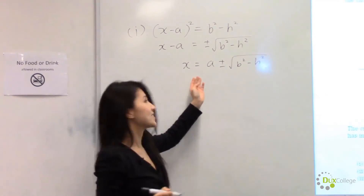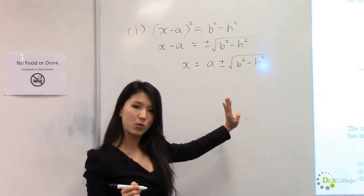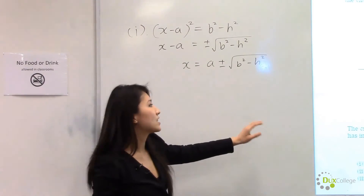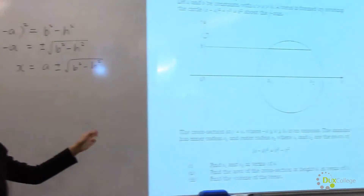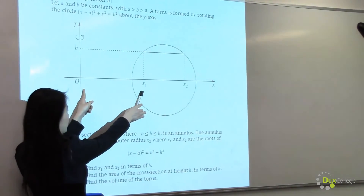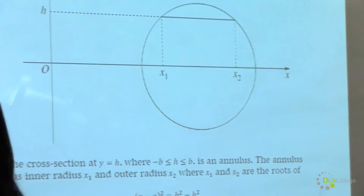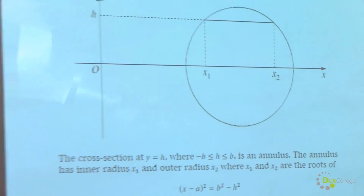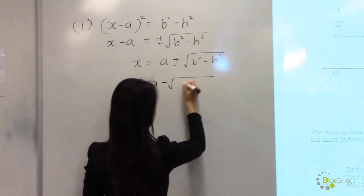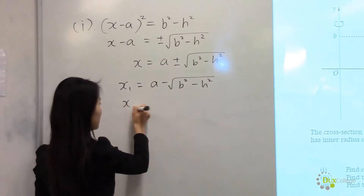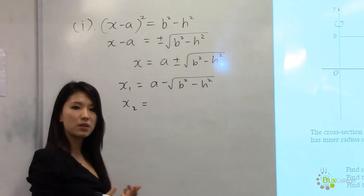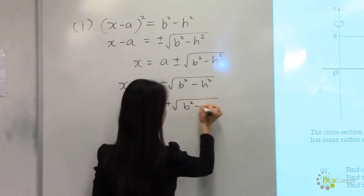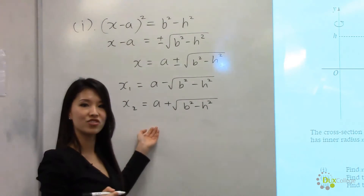Now we have two solutions: x equals a plus and minus the square root of b squared minus h squared. Since, looking at our diagram, x1 is closer to 0 compared to x2, x1 must take the shorter length. Hence x1 equals a minus the square root of b squared minus h squared, and x2 equals a plus the square root of b squared minus h squared. We have finished part one.